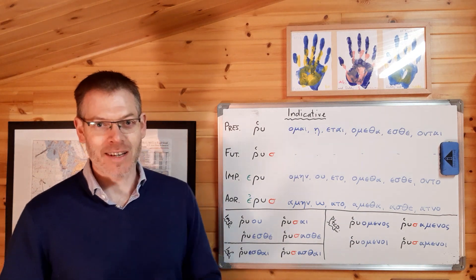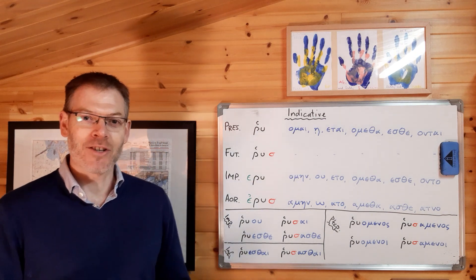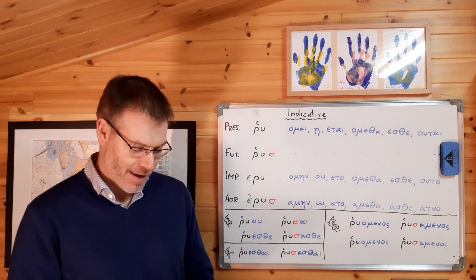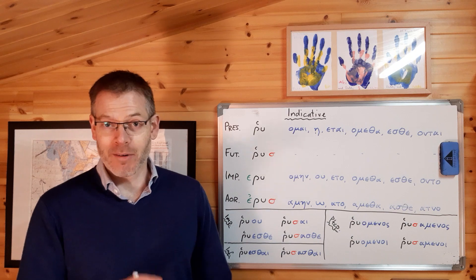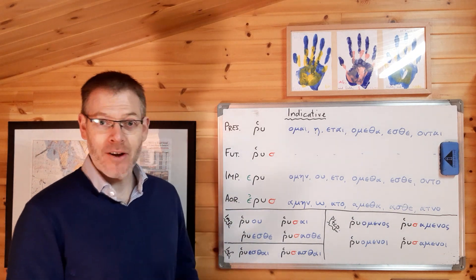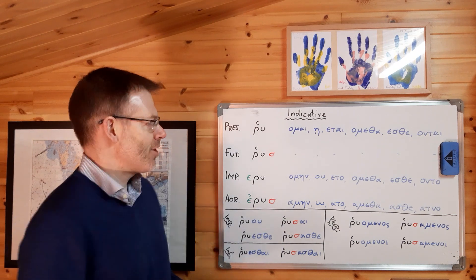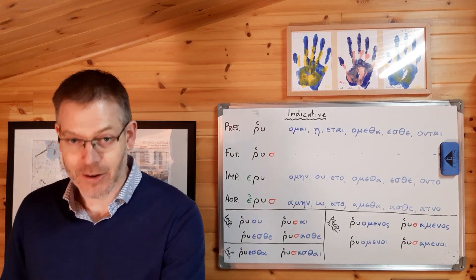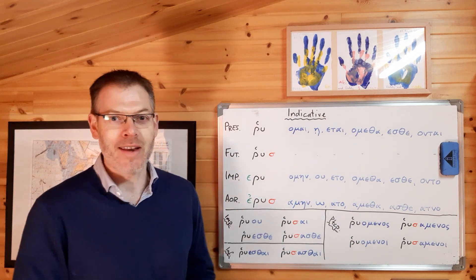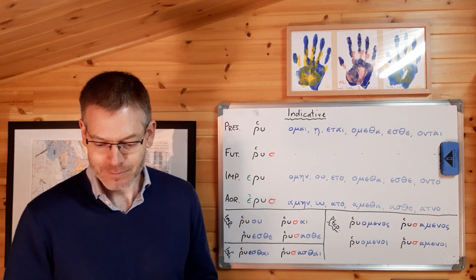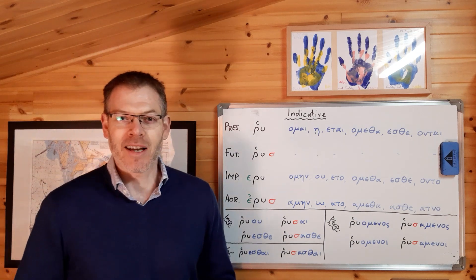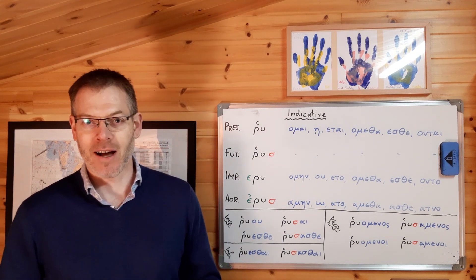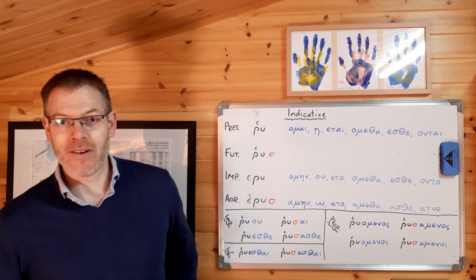Now, there is obviously some stuff to learn here, but I've got some good news for you, as ever. I'm going to show you that there are some patterns, there is some logic to what's going on here, and I'm hoping I'm going to be able to make it a little bit easier for you. In this video, I'm going to first explain what the deponent verbs are, and then go through the patterns on the board, summarised from pages 91 and 92, and draw attention to patterns within the conjugations which will help you remember them.